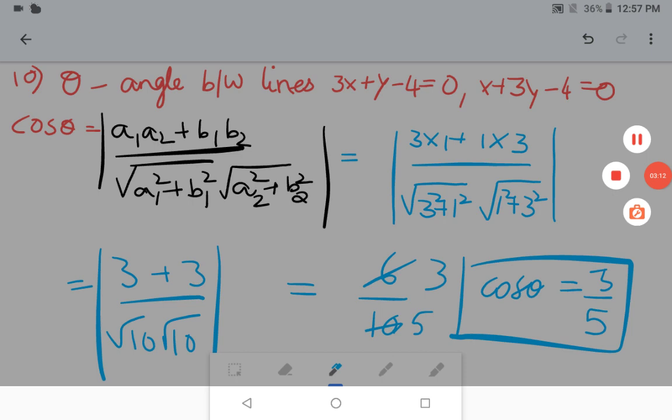Now, as in the previous question, how we did, what is a1? a1 is the coefficient of x of the first line. That is a1 will be 2, b1 will be 3 and what is c1? There is no constant term, but when you are sending this positive 5 to LHS, it will become negative 5. So that will be considered. What is c1? Minus 5.